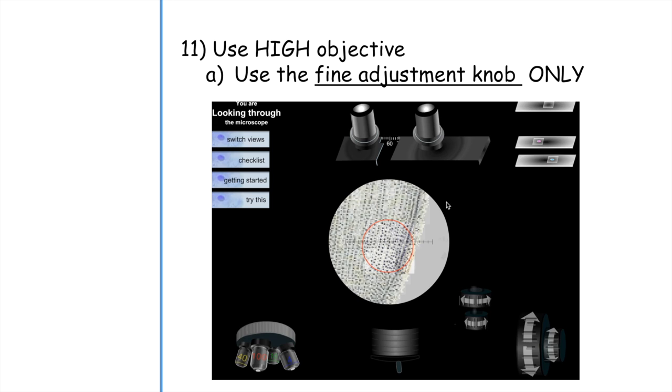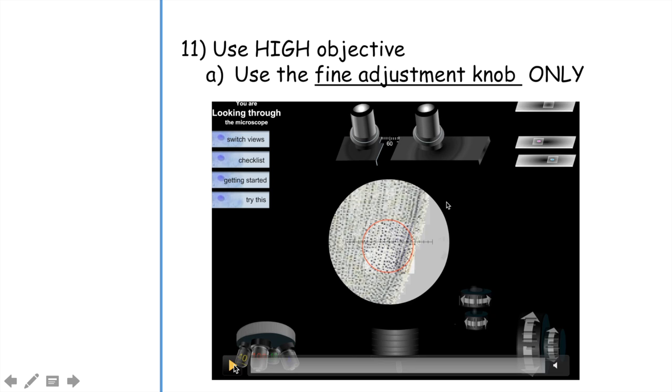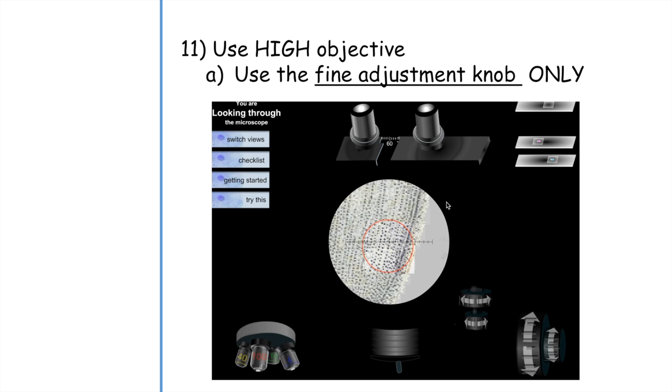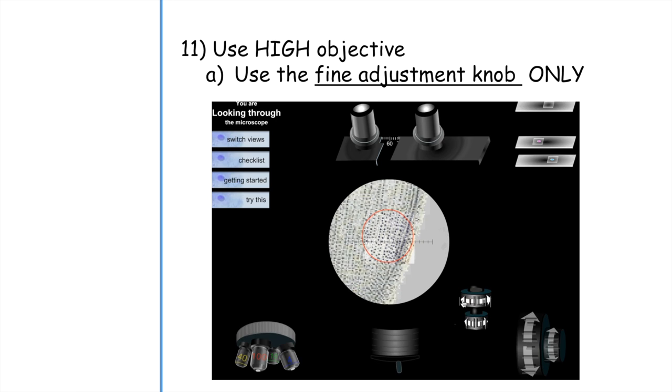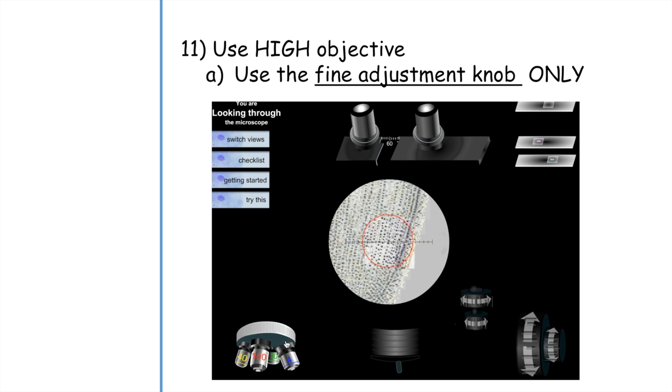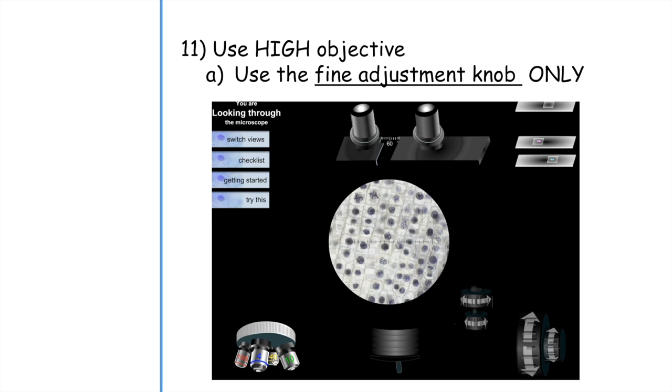The next step would be to switch to a high objective. In this case that would be 40 times the magnification. One of the things I'm going to do is readjust so that where I want to zoom is actually in the center of my view before I switch my magnification. Then I can go ahead and turn the revolving nosepiece so that the objective 40 is in the correct spot. Now you can see there is a really beautiful view of these plant cells. Now you're just going to use the fine adjustment knob to find the most focused view of your specimen.